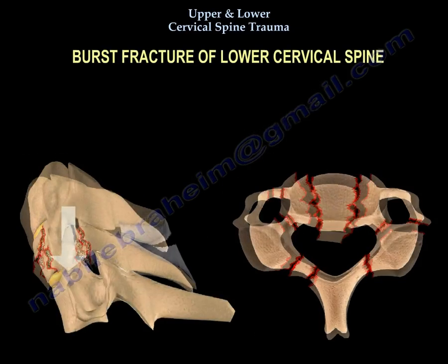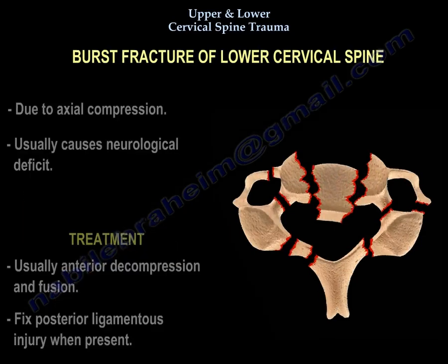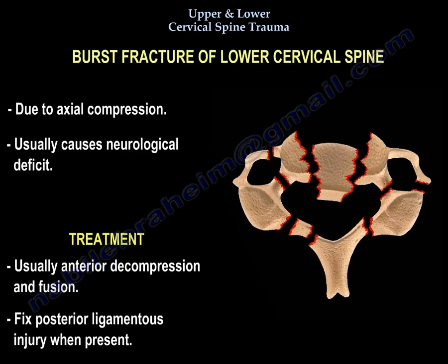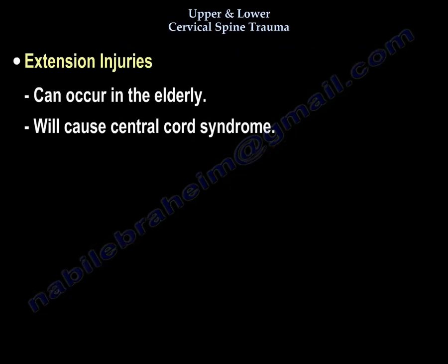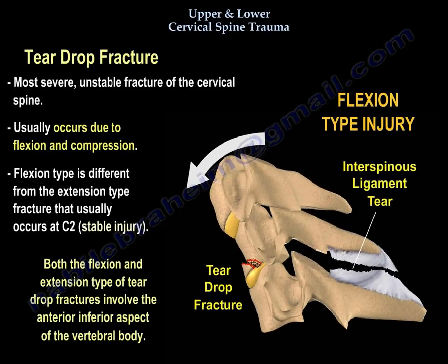Burst fracture of the lower C-spine results from axial compression. Usually the patient has neurological deficit, and treatment is usually anterior decompression and fusion — unless there is posterior ligamentous injury, in which case you fix that also. Extension injuries in the elderly will give you central cord syndrome. The teardrop fracture is the most severe unstable fracture of the C-spine. It usually occurs from flexion and compression, which is different from the extension teardrop fracture that usually occurs at C2 and is usually a stable injury.